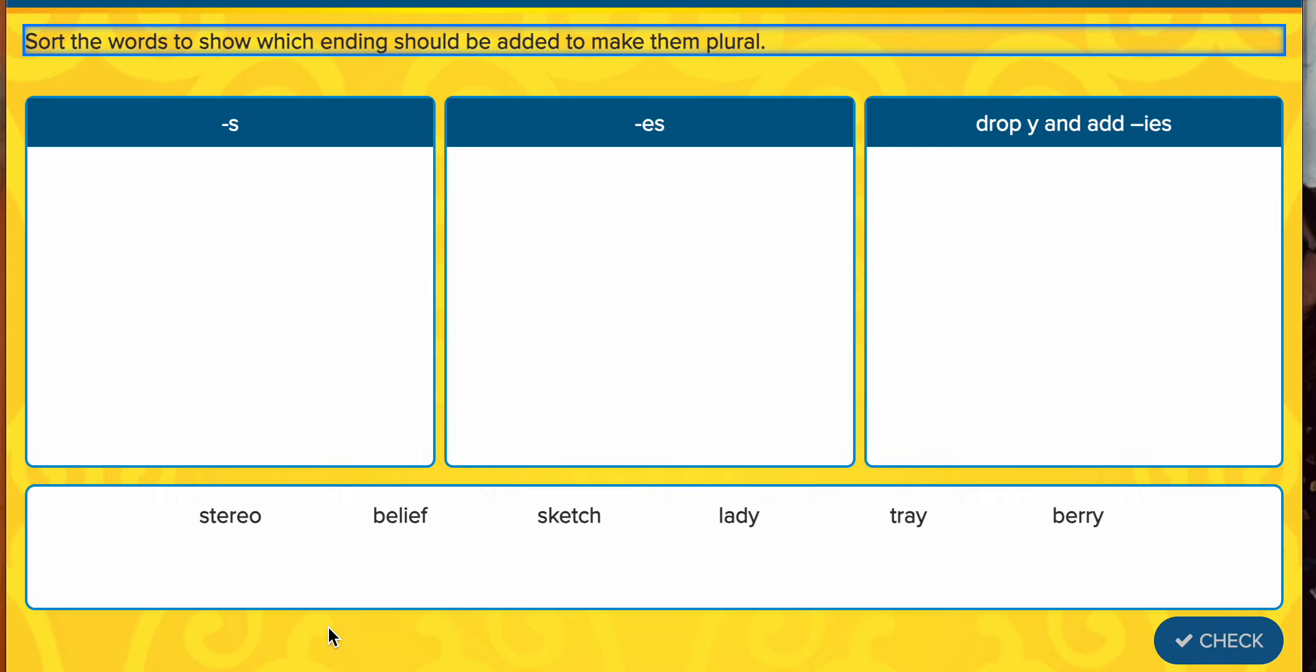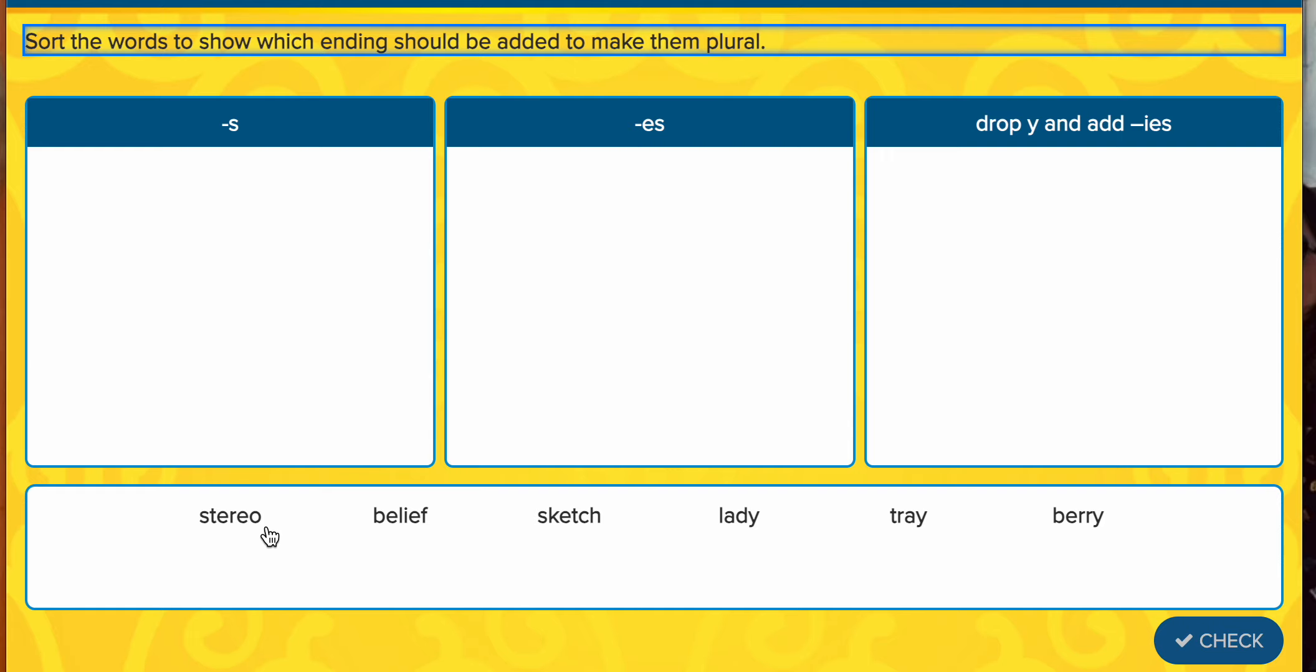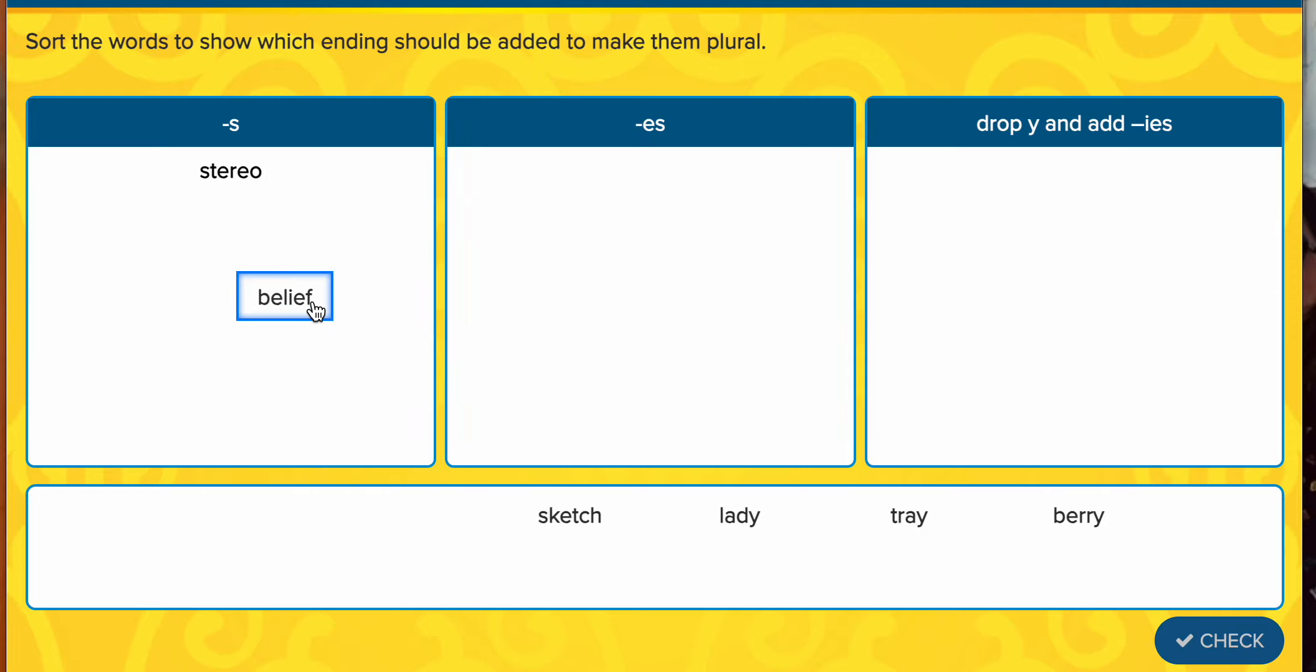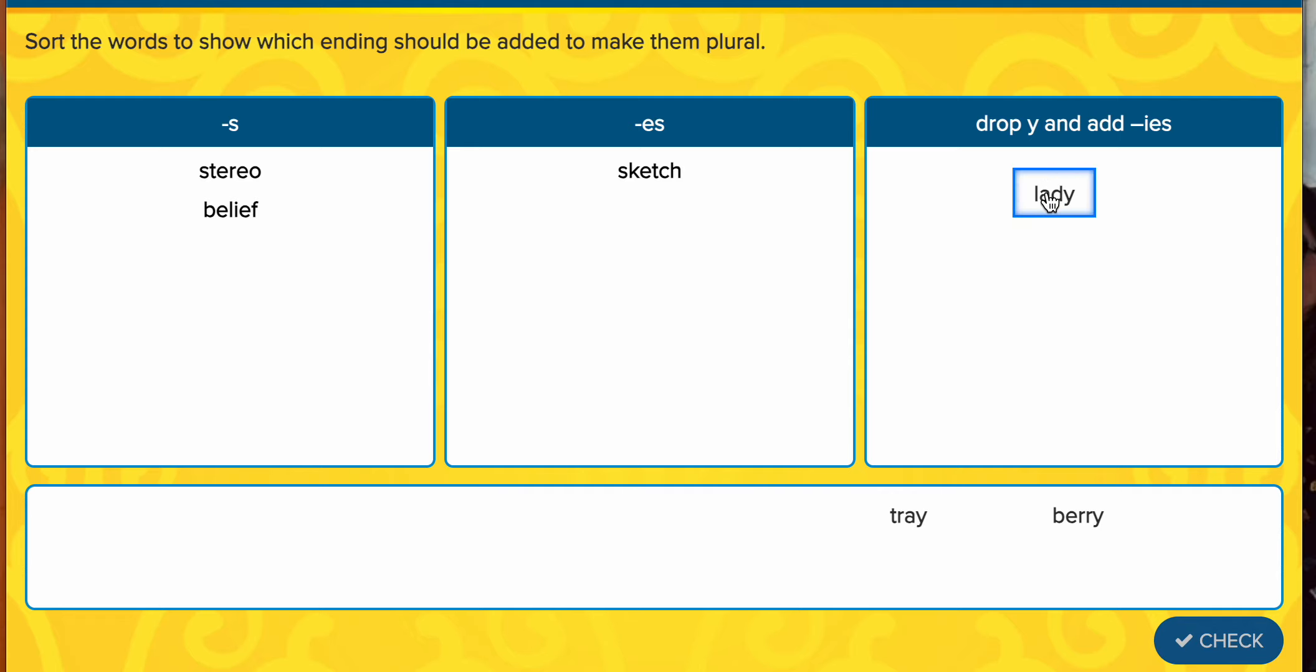Now, let's do it again. Stereo, stereo. Doesn't have a funny ending. Doesn't have a y. I'm going with s. Belief, once again, does not have a funny ending. What do I mean by funny ending? Doesn't have that s or that s sound or a ch sound. So I think it's going to go with regular s. And it certainly doesn't end in y. Sketch, ooh, that has that kind of sneaky sound. I think I'm going to go with e, s at the end. Make it sketches. Lady, lady. Ends in my key letter y. So I'm going to drop the y and add an i, e, s to be ladies.